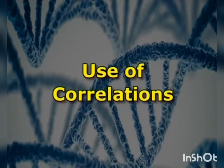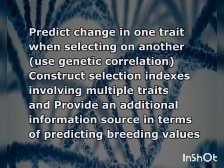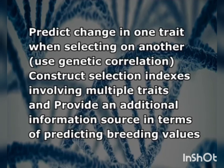The uses of genetic correlation are: it helps to predict changes in one trait when selecting on another; it helps to construct selection indexes involving multiple traits; and it provides an additional information source in terms of breeding values. This concludes the session on genetic correlation. Hope you enjoyed this session — thank you.